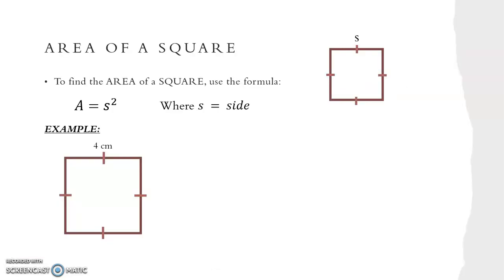For the area of a square we use the formula A equals S squared, where S stands for the side length of the square. For our example, our first step is to write out our formula A equals S squared. We then have a side length of 4 centimetres, so we substitute this in to get A equals 4 squared. Putting that into our calculator gives an answer of A equals 16 centimetres squared. It's important to include our units, and for area our units are always squared.